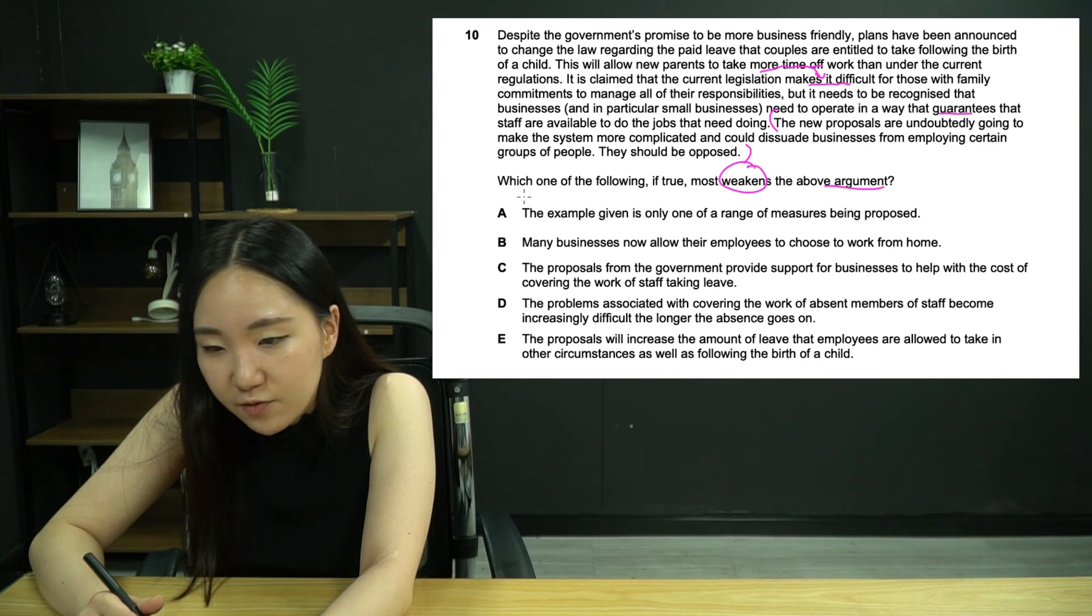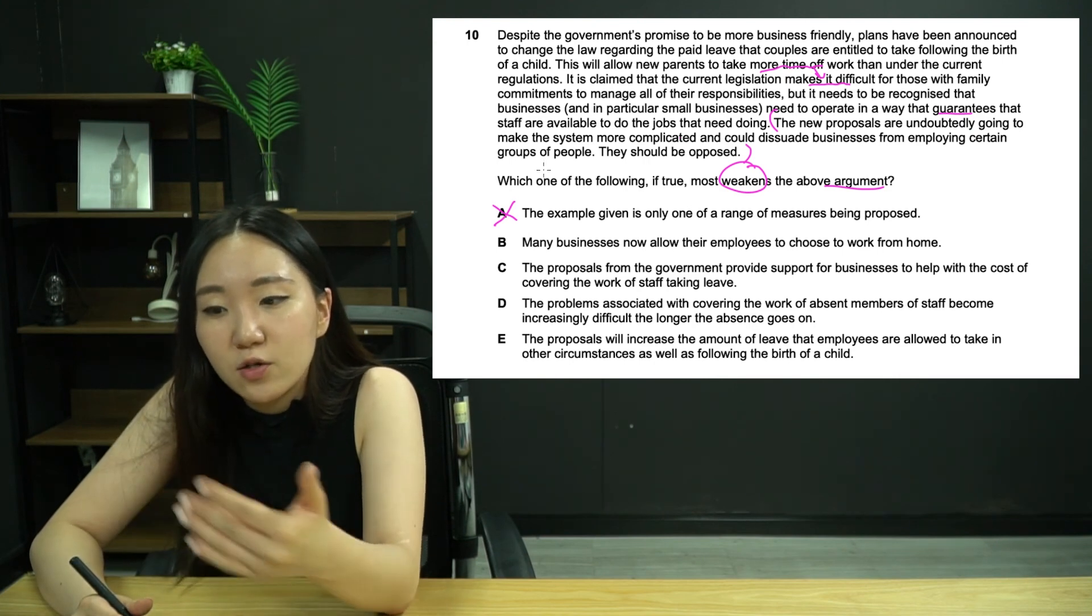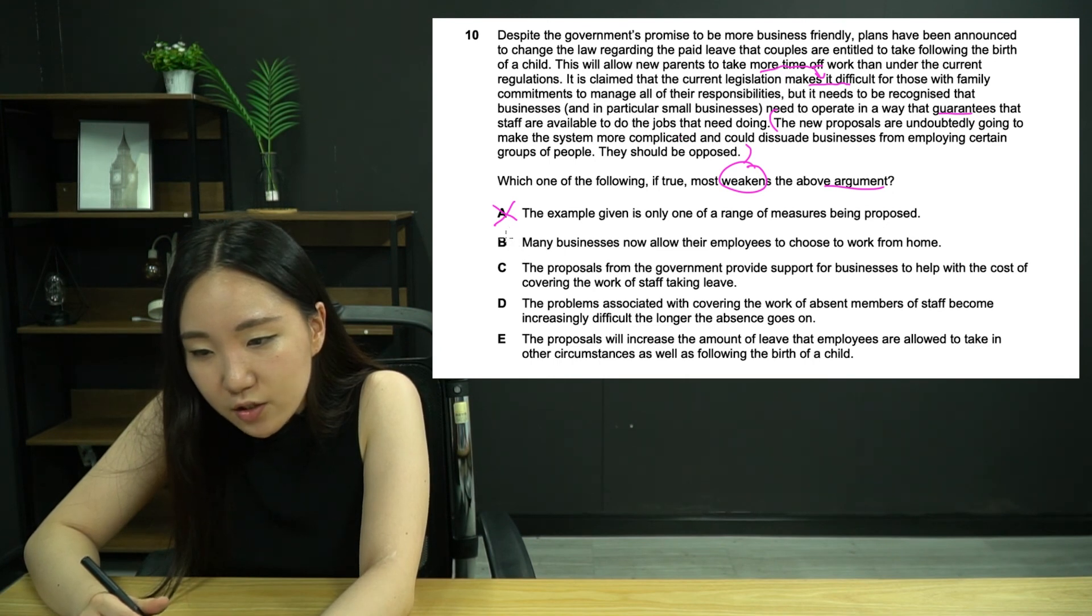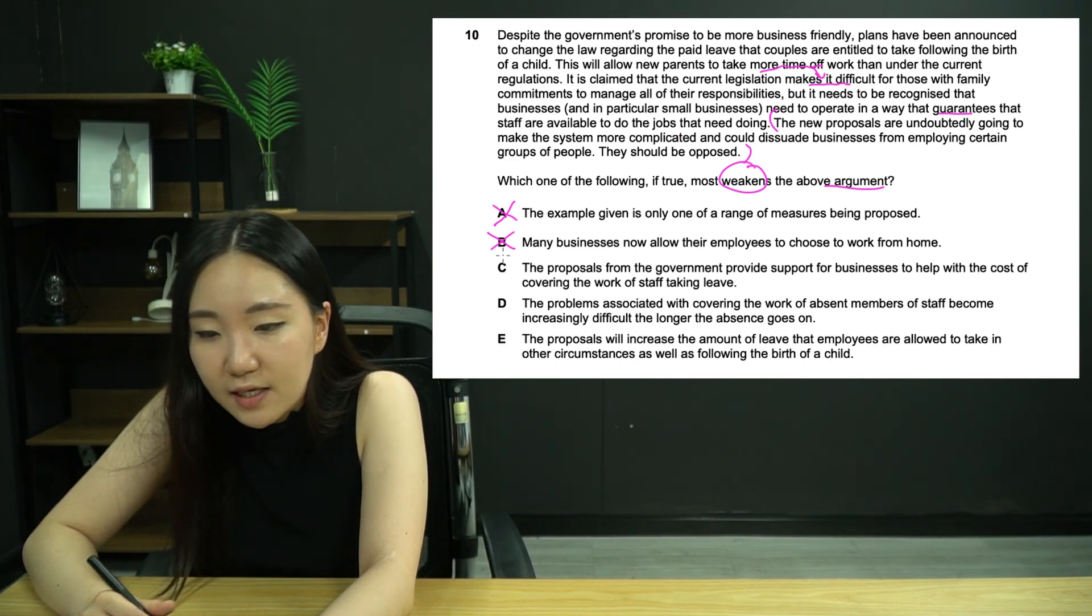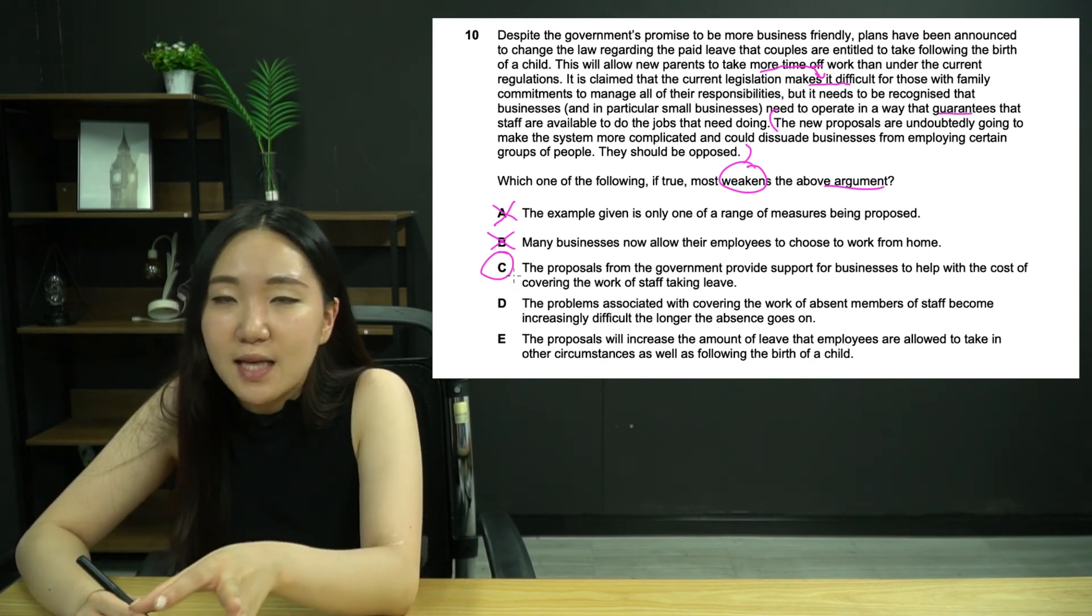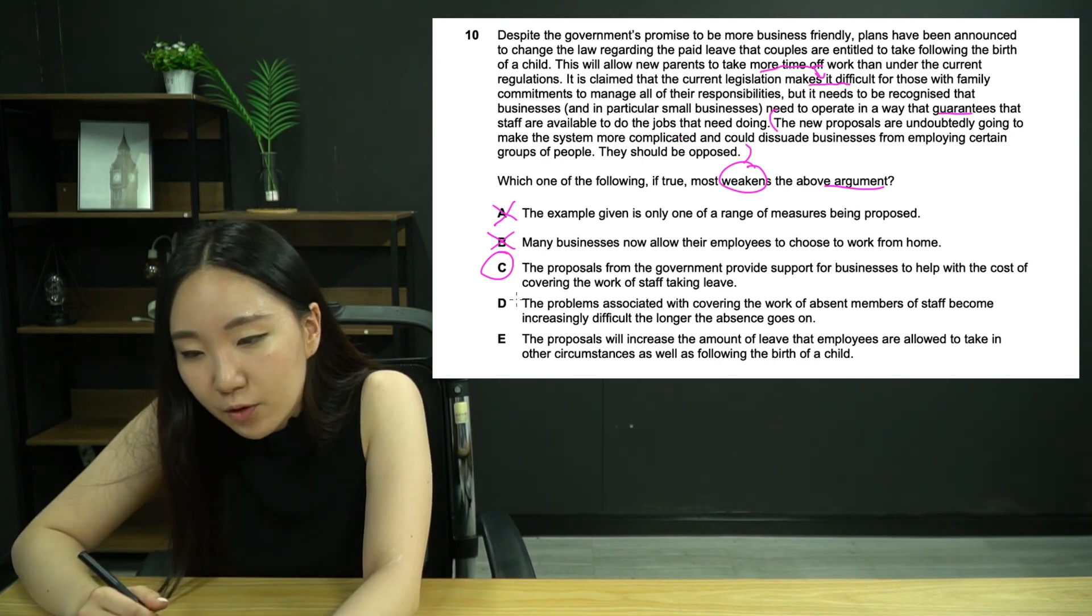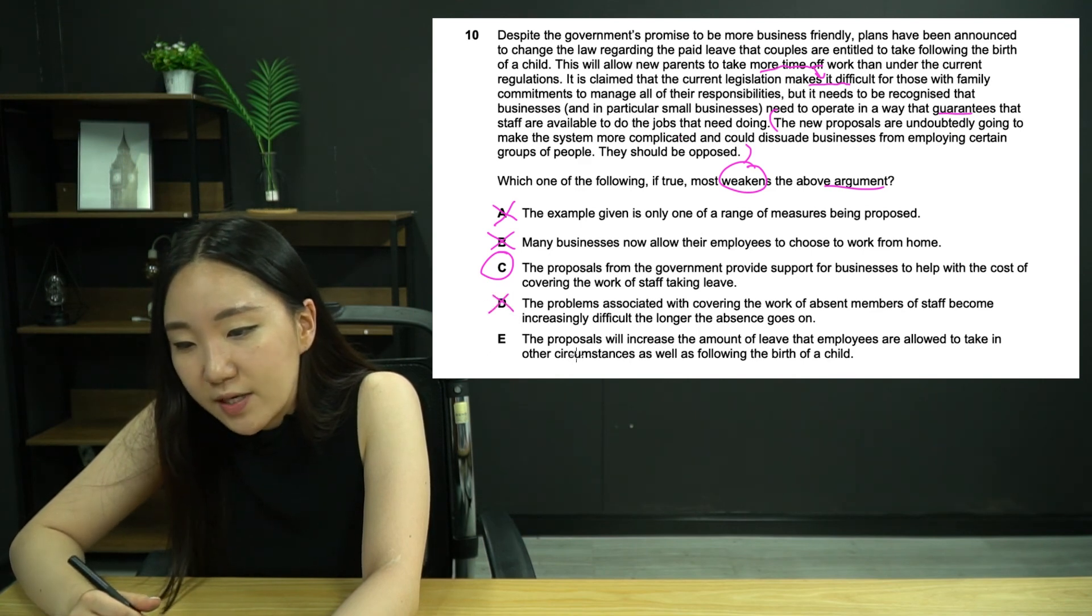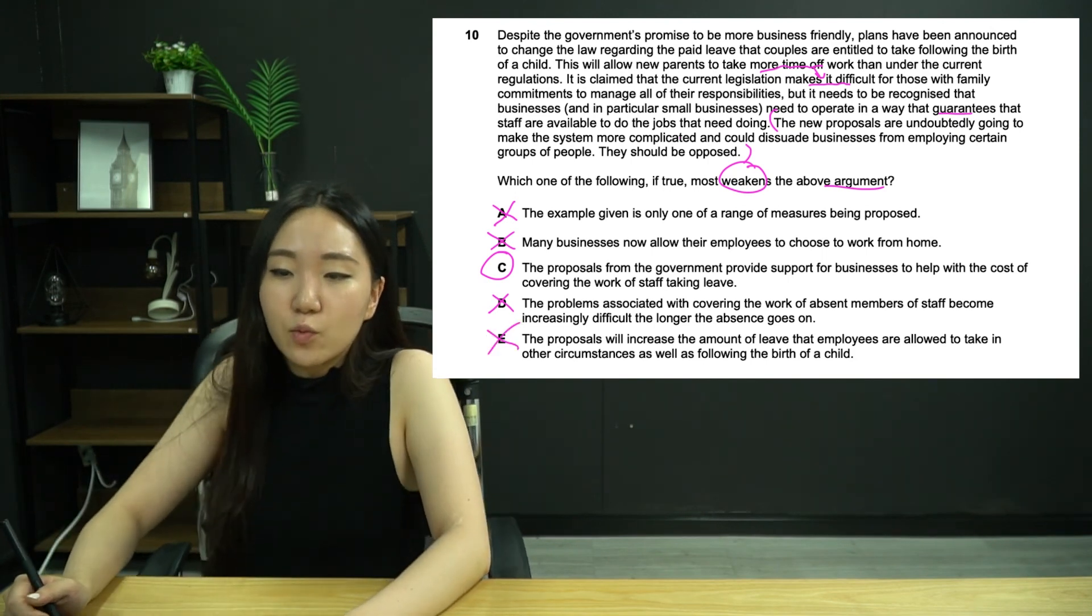The conclusion is stop this law because otherwise businesses are going to discriminate against certain groups of people. Let's see what weakens the argument. The example given is only one of a range of measures being proposed - doesn't matter, that measure will still affect it. Many businesses now allow employees to work from home - working from home is still working. The proposals from the government provide support for businesses to help with the cost of covering the work of staff taking leave. That would pretty much turn it on its head. That's C.